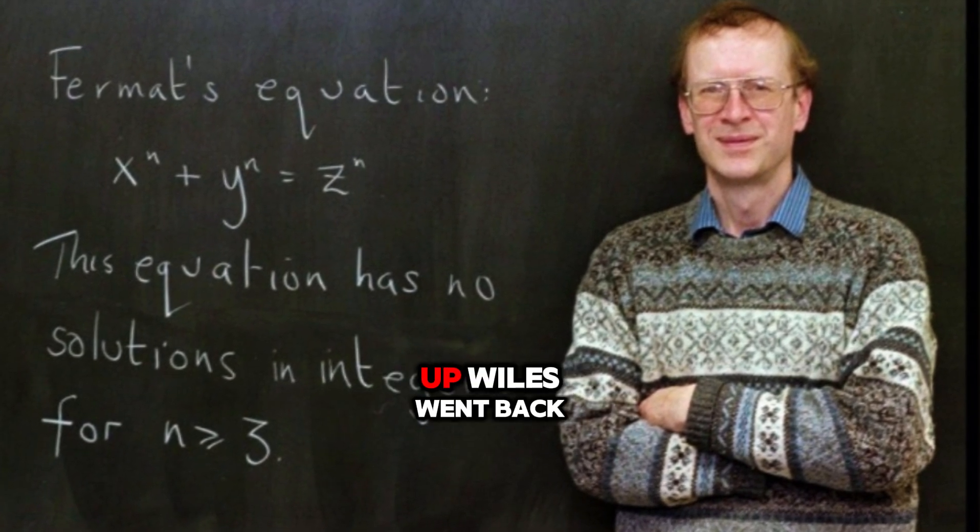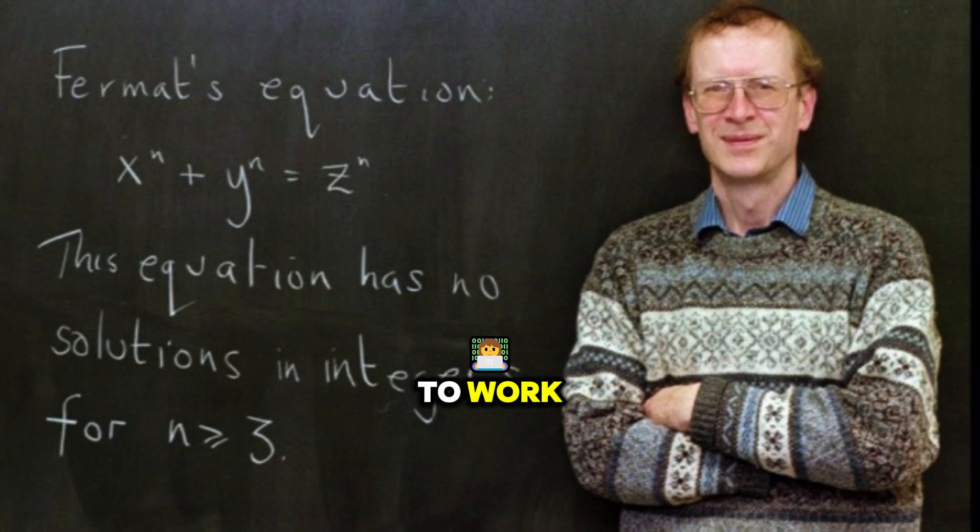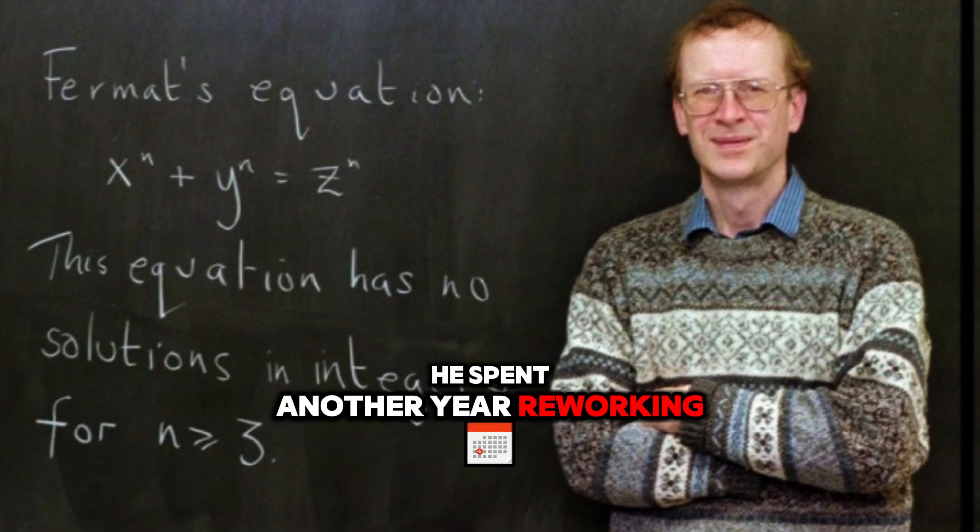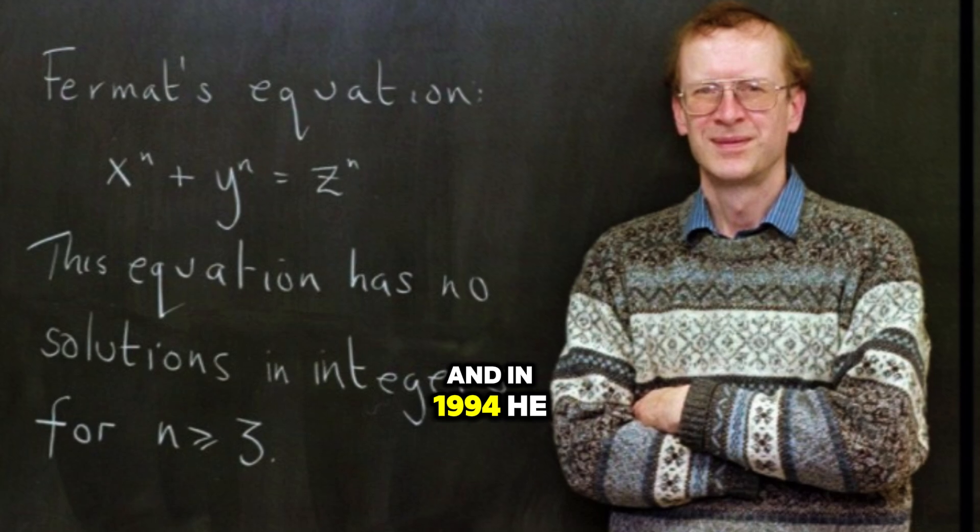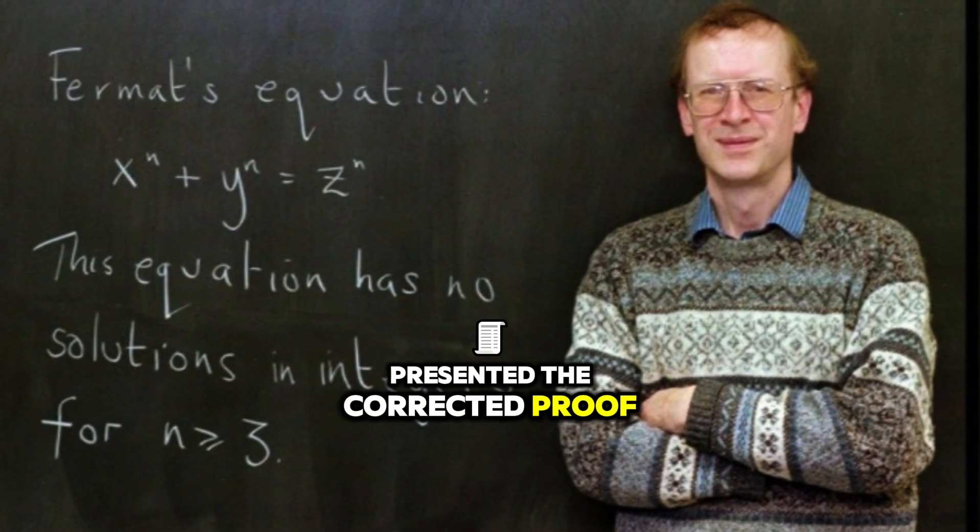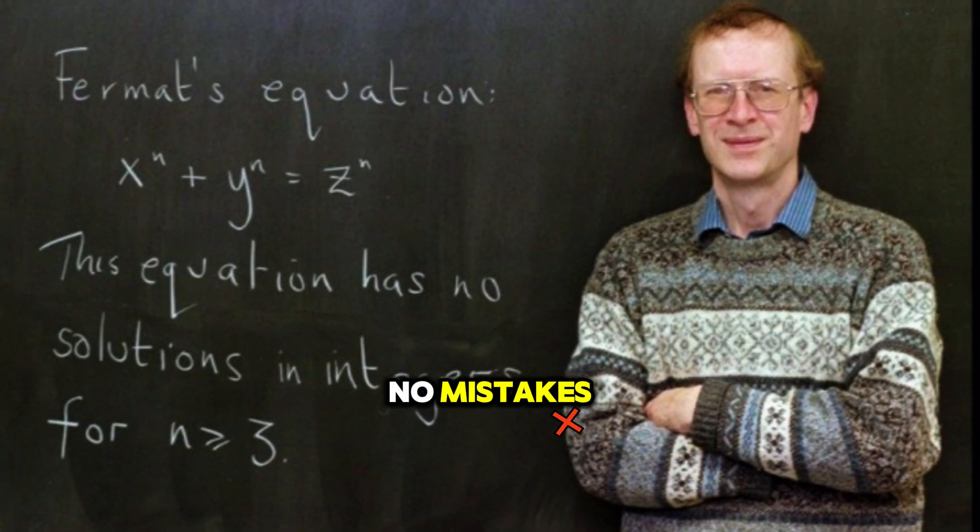But instead of giving up, Wiles went back to work. He spent another year reworking the proof, carefully fixing the error. And in 1994, he presented the corrected proof. This time, there were no mistakes.